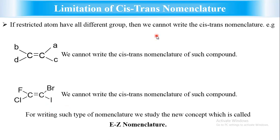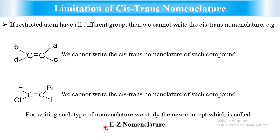What are the limitations of cis-trans nomenclature? If the restricted atom has four different groups (A, B, C, D), we cannot write a cis-trans configuration. For example, a compound with fluoro, bromo, chloro, and iodo groups on the double bond carbons cannot be assigned cis or trans. For such cases, another concept called E/Z nomenclature is used, which will be explained in the next video. Thank you very much.